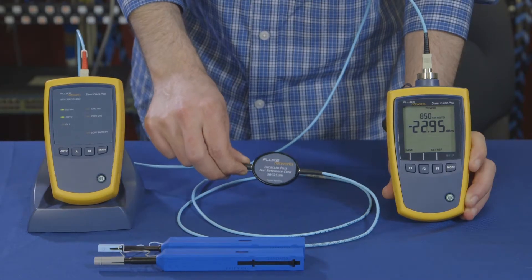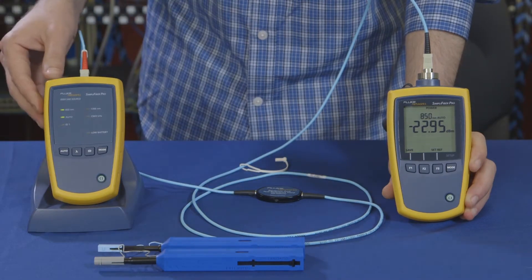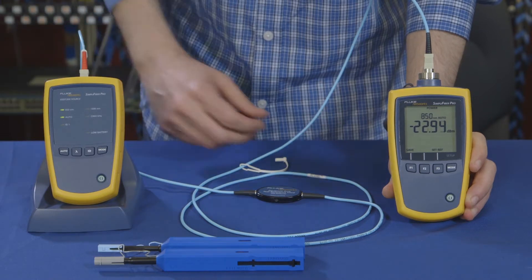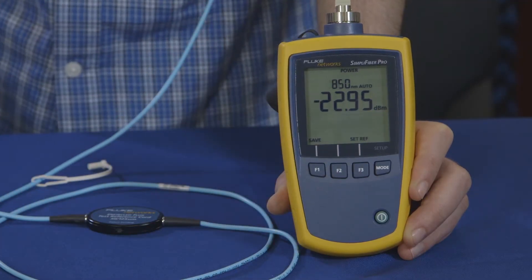Using our encircled flux TRC we've attached the light source to the power meter. We set reference using the one jumper method.